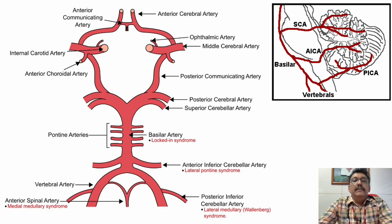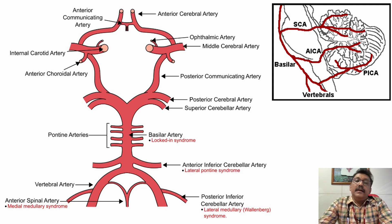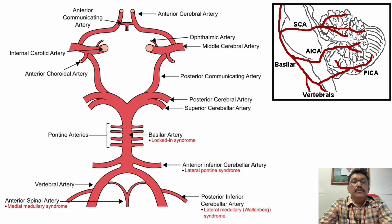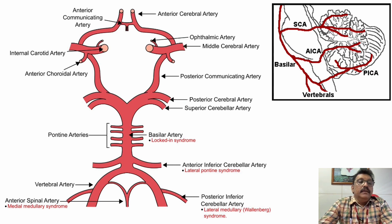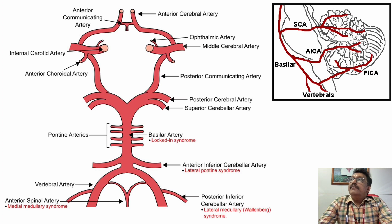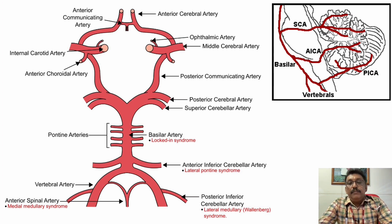You can see here the arteries — vertebral arteries, basilar arteries, posterior inferior cerebellar artery (PICA) — all these arteries can produce lateral medullary syndrome. One of the most important arteries is PICA, the posterior inferior cerebellar artery. Whereas medial medullary syndrome can be produced by the anterior spinal artery — that is the main difference between medial and lateral medullary syndrome.